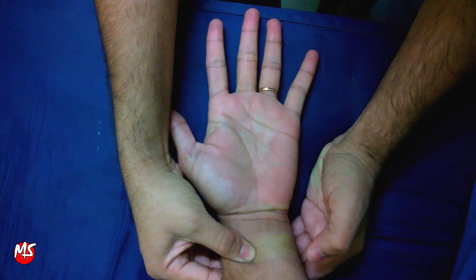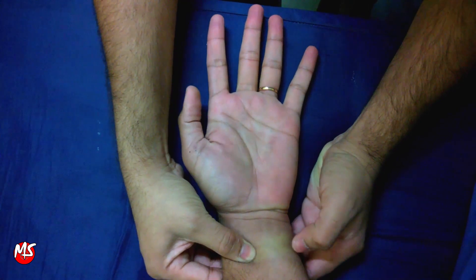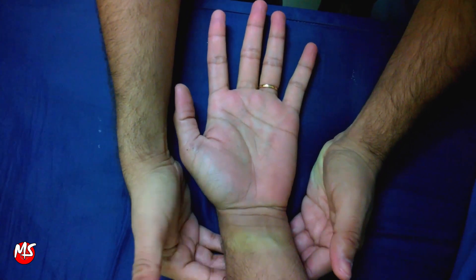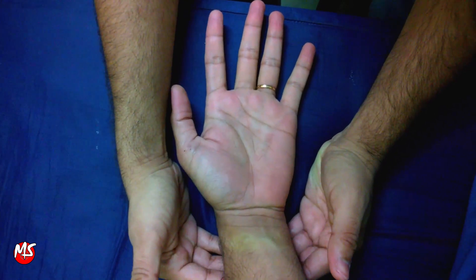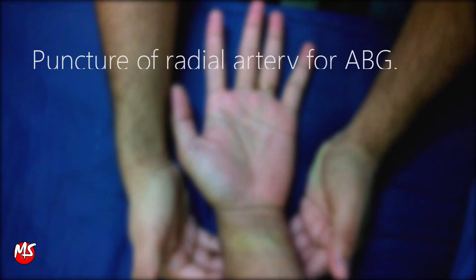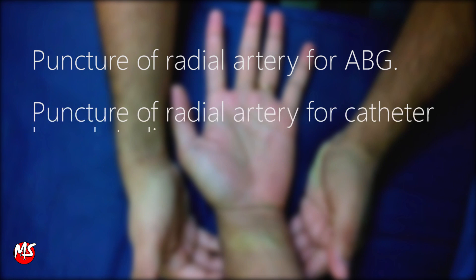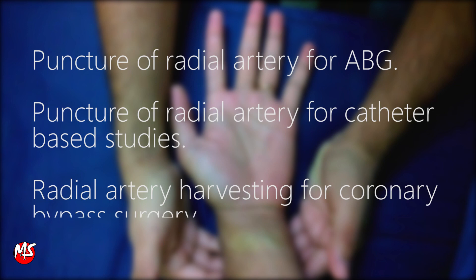If this doesn't happen, it shows that ulnar circulation is inadequate, and the radial artery should not be used for the following procedures: puncture of the radial artery for ABG, puncture of the radial artery for catheter-based studies, or radial artery harvesting for coronary bypass surgery.